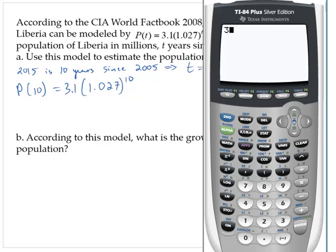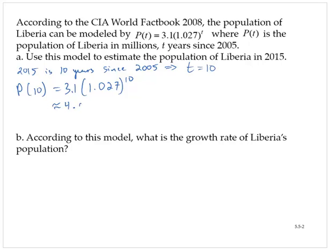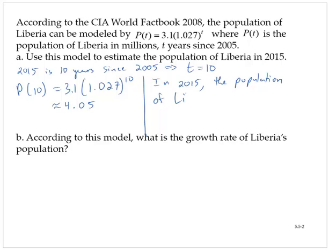3.1 times 1.027 to the 10th power is about 4.05. So in 2015, the population of Liberia will be about 4.05 million, since the population was given in millions.